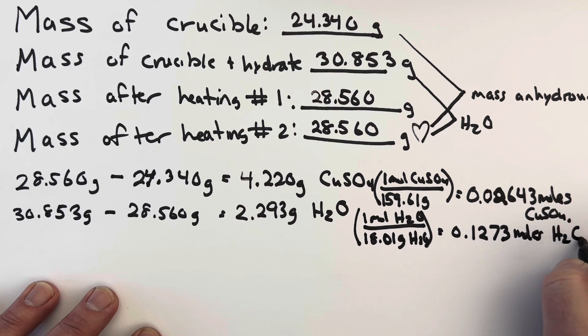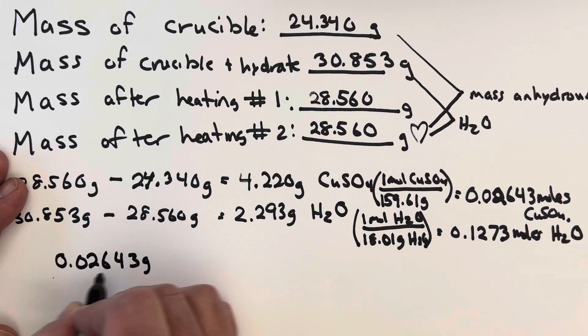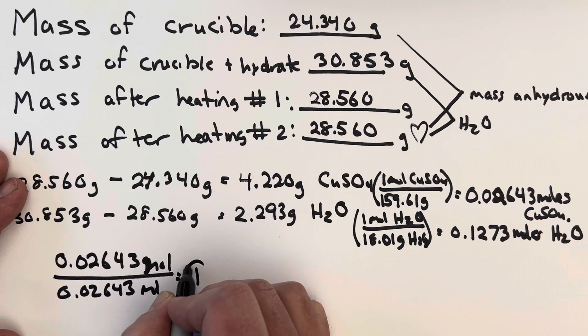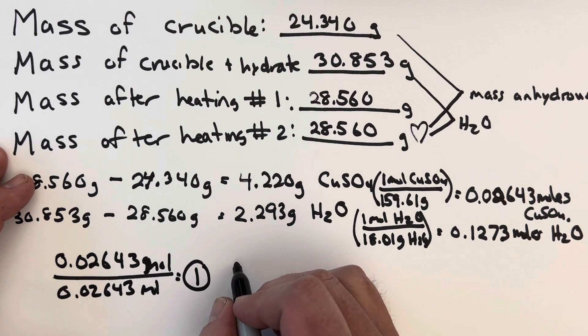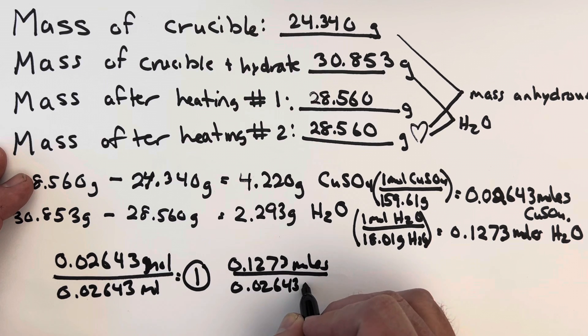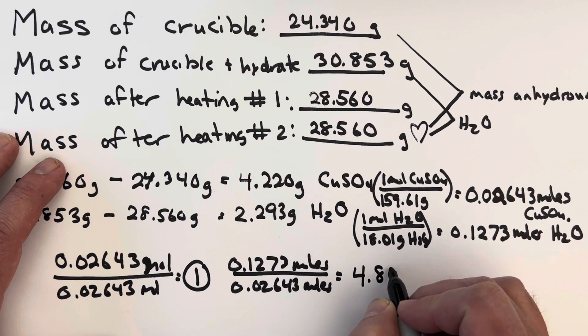Then the last step is to take these two mole values and divide them both by the smaller one, which is usually the number of moles of the anhydrous compound because there's usually more waters than that in terms of moles. Let's go ahead and divide both of them by the smaller one, 0.02643, and that gives me a one for the copper sulfate. For the water, 0.1273 moles divided by 0.02643 moles, tapping my calculator gives me 4.816.